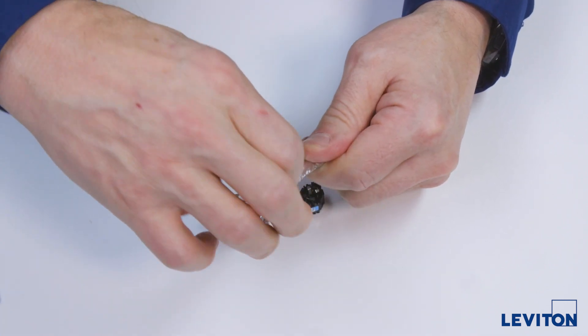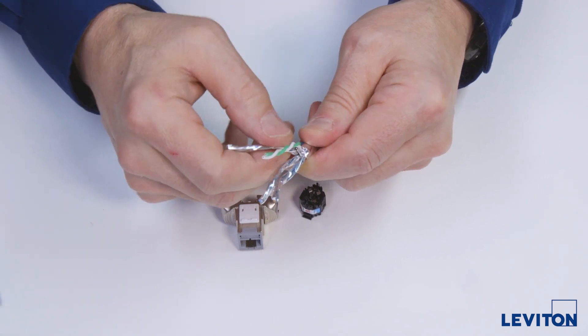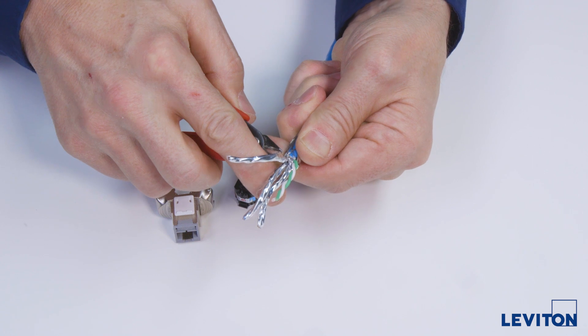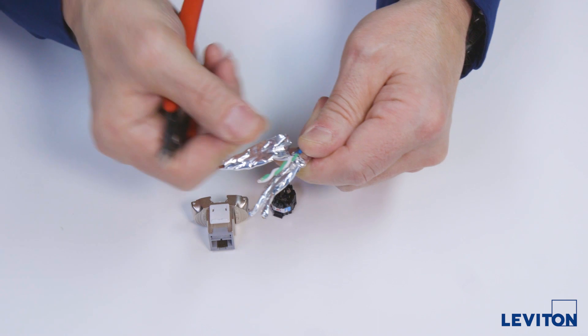If the green pair foil tears, you can use the foil from another pair. Open up the other three foils, nick the foils with flush cutters at the strip point, being careful not to hit any of the braid, and tear them off.